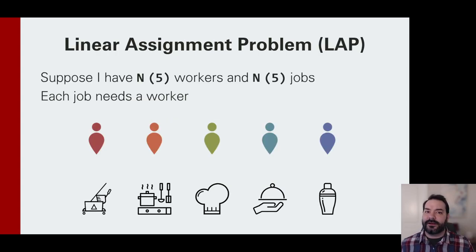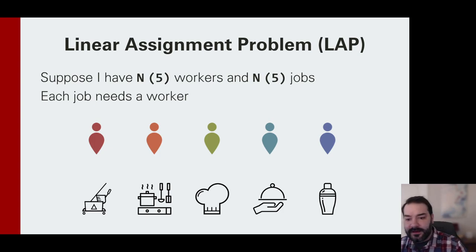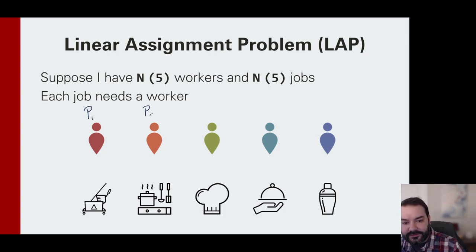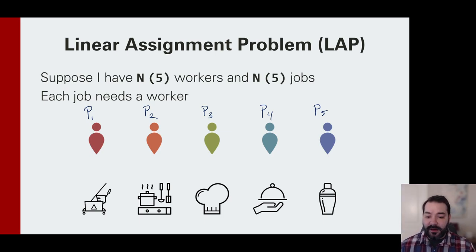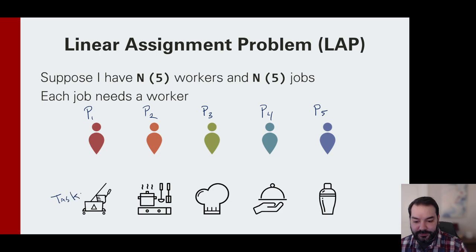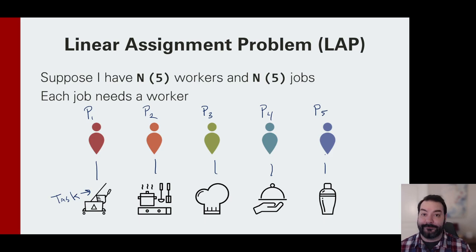That's where I'm going to introduce a new problem: the linear assignment problem. I have five people — P1 is red, P2 is orange, P3 is green, P4 is blue, and P5 is purple. With that in mind, which task should each person do? You might say, oh, red is right above custodian, just give them what they're next to — we're done.